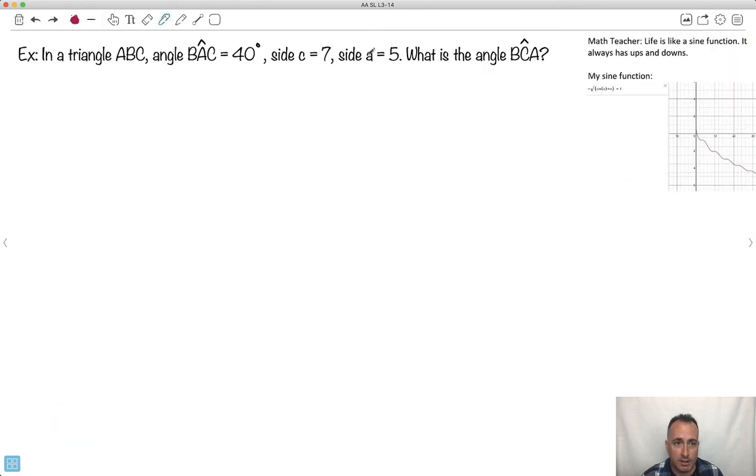We've got triangle ABC. We don't have a drawing of it, so we're supposed to try to figure it out. Angle BAC is 40 degrees, side C is 7, side A is 5. What's angle BCA? The teacher said life has its ups and downs like a sine function. I was like, nope, not this one. It just goes down.